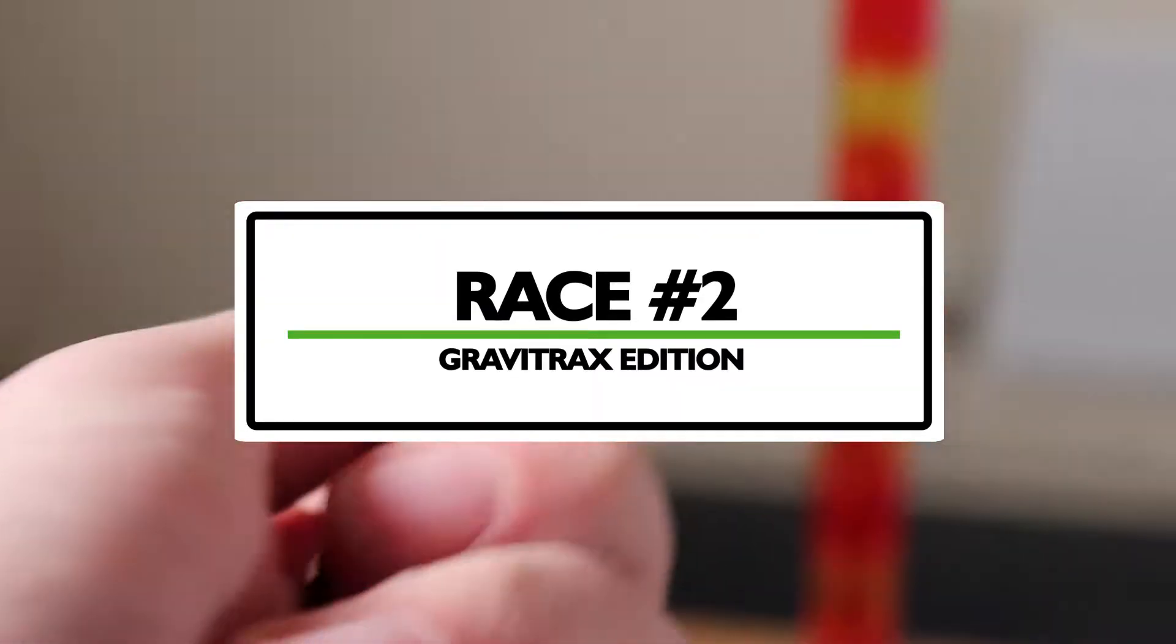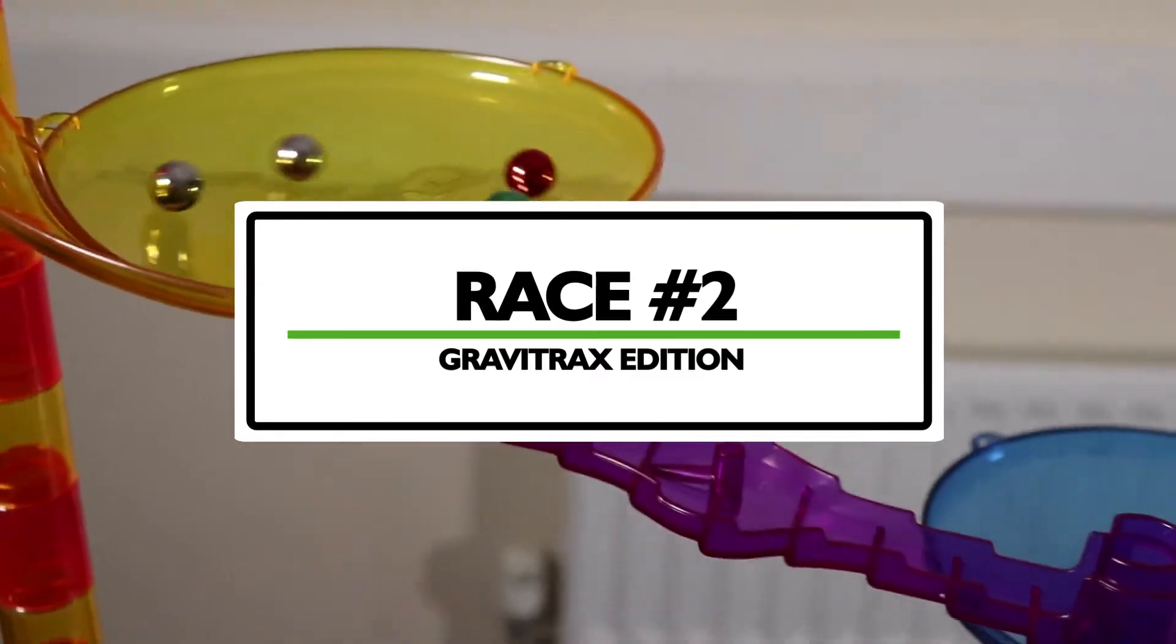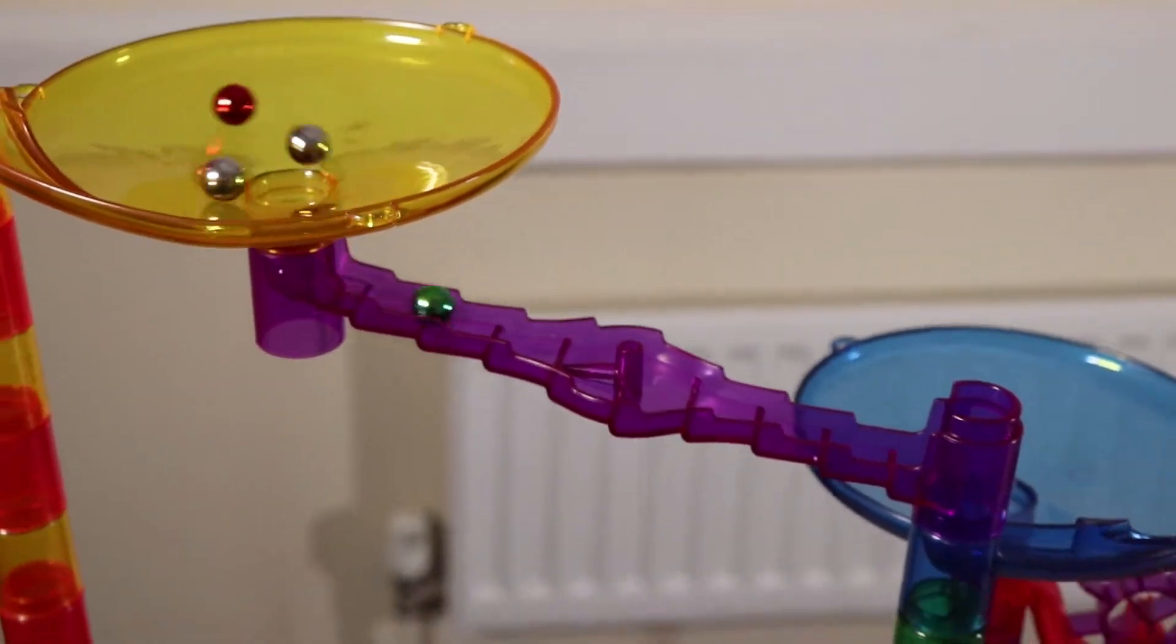And here we go going into race two. The five remaining marbles all get dropped in and it was the red marble that got stuck a little bit there. Can he regain that early lead? The chrome marble drops in early.